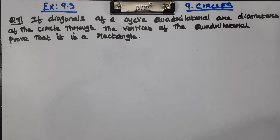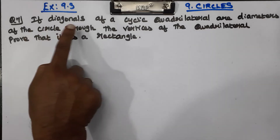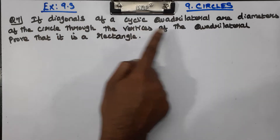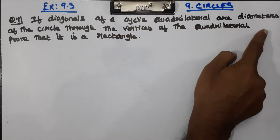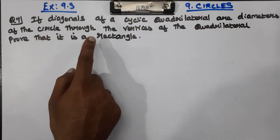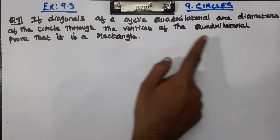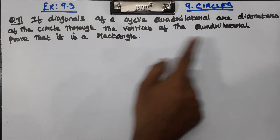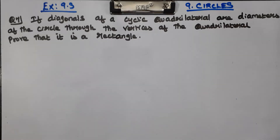So Question Number 7: If diagonals of a cyclic quadrilateral are diameters of the circle through the vertices of the quadrilateral, prove that it is a rectangle.